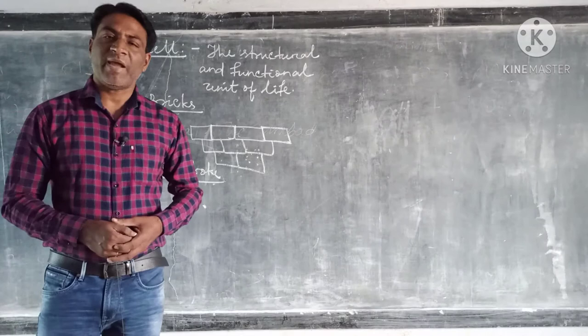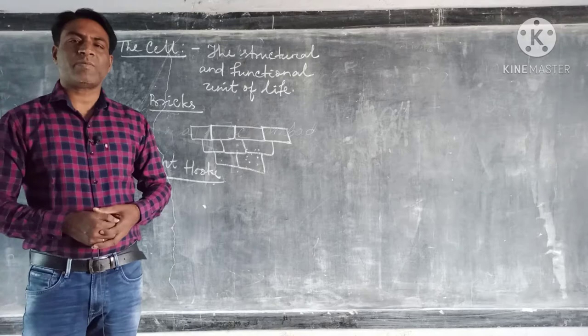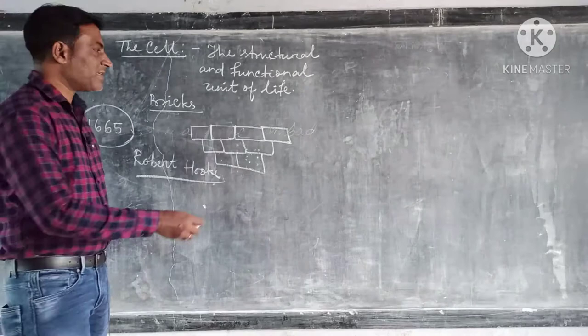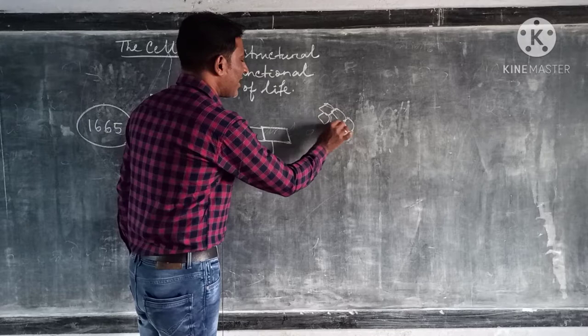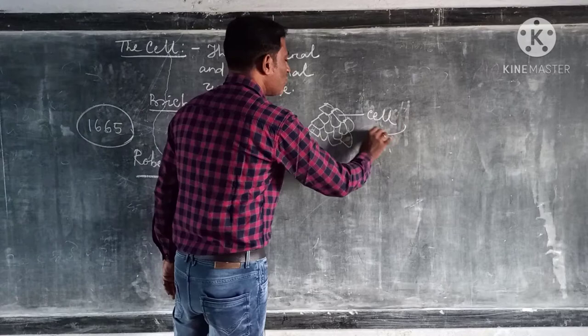How he discovered cell? He first made his own compound microscope and a button cork. With the button cork, he observed that the cork has many empty spaces without any compact mass. So Robert Hooke coined this empty space as cell.